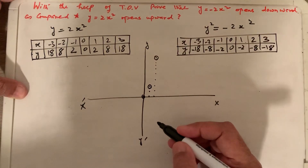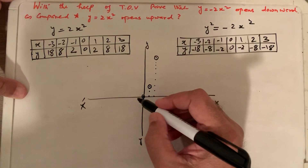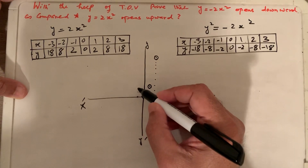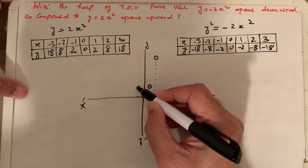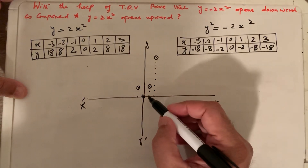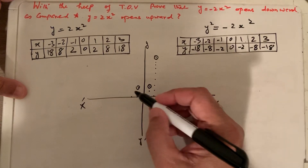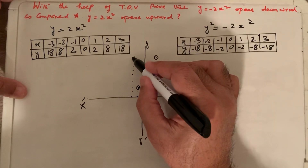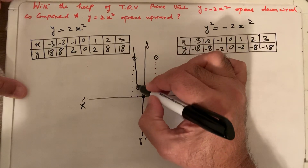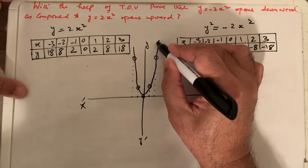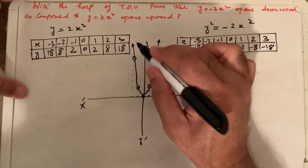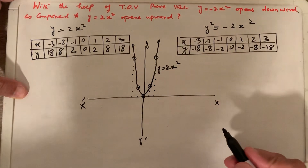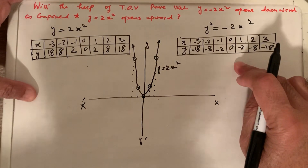We continue with three points since arrows show the parabola continues. For negative x values: at x equals minus 1, y equals 2; at x equals minus 2, y equals 8. The parabola goes upward with arrows at the ends. This is my parabola for y equals 2x squared, opening upward. Now I draw the table of values for y equals minus 2x squared to prove it opens downward.